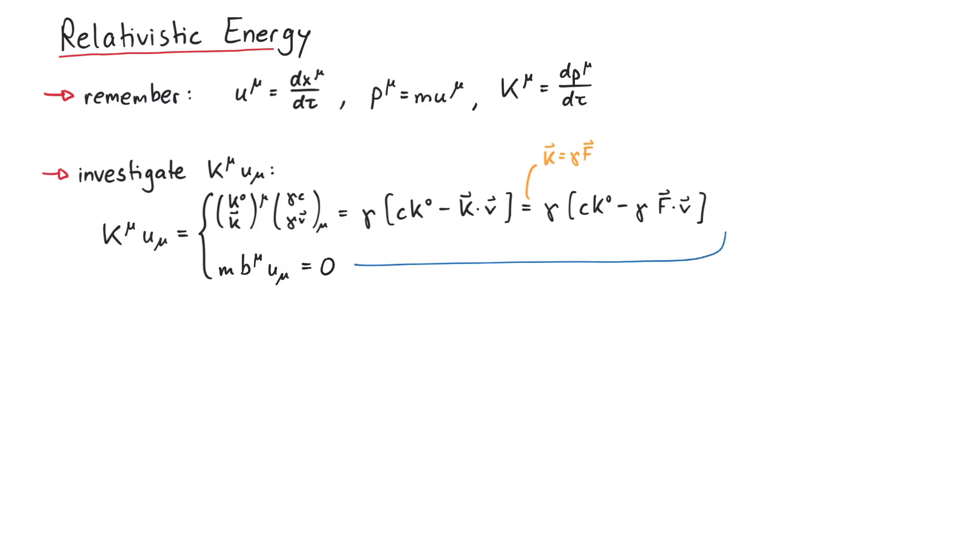Therefore, also the above expression must vanish. This helps us to determine k0, which is given by gamma over c times the inner product of f with v.